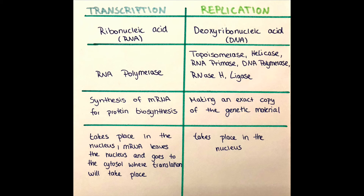In the replication more enzymes were needed. Those were: the topoisomerase which unwinds the DNA, the helicase which splits the hydrogen bonds, then the RNA primase which synthesizes the primer, the DNA polymerase which attaches the nucleotides to the strands, the RNase which removes the primers in the Okazaki fragments, and the ligase which connects the backbone together so that the semi-conservative DNA is completed. If this was a little bit too fast you can go back to my previous video about the replication and see everything a little bit slower again.